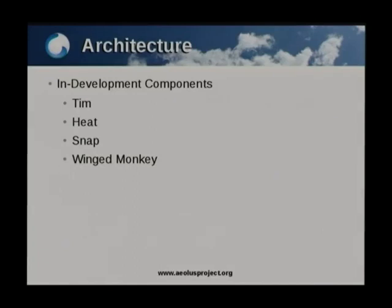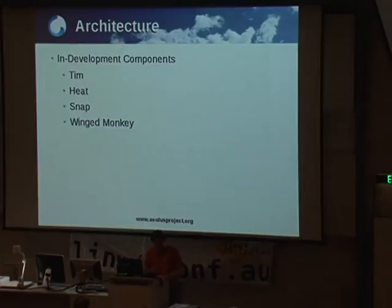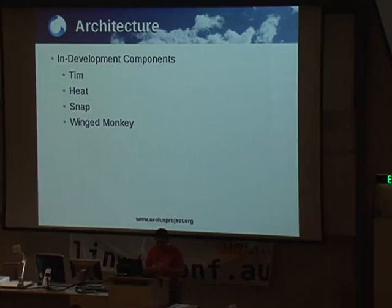Then you've got Heat, which is actually an OpenStack project, but we're looking at integrating it into ELIS as well. It provides a programmable interface to orchestrate multiple cloud applications, implementing well-known standards such as CloudFormations and Tosca. Then you've got Snap, still in very early development - it's an in-instance cloud configuration utility which allows the end user to take a snapshot of an instance running on a cloud and restore the instance running on another cloud provider. Currently Snap supports RPM-based, Debian-based, and Windows-based guests. And then there's WingedMonkey, a self-service portal for non-administrative users, which is also in development.